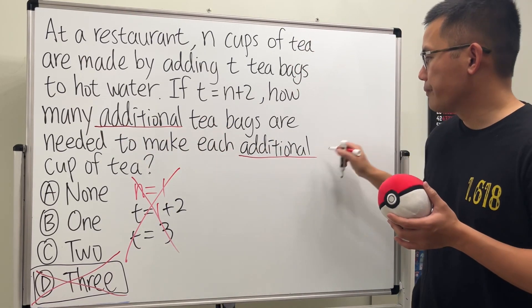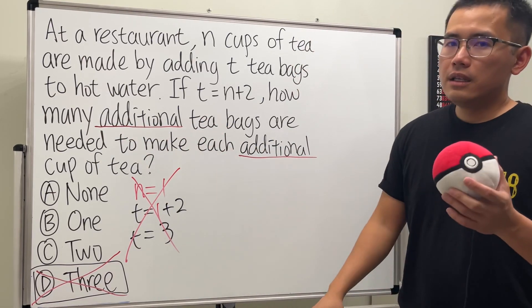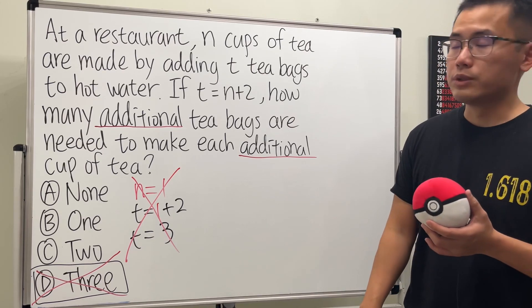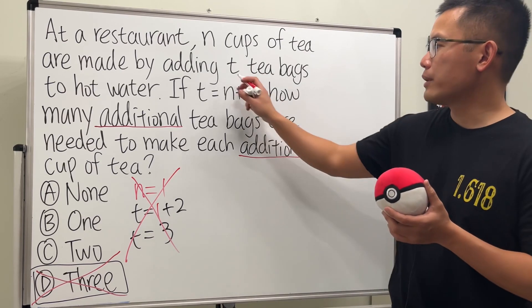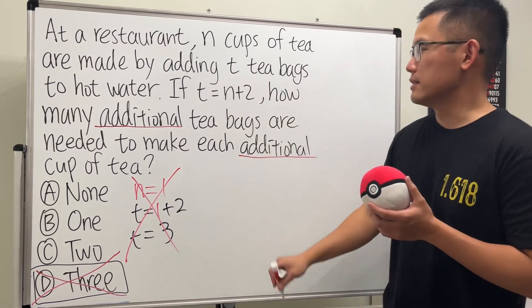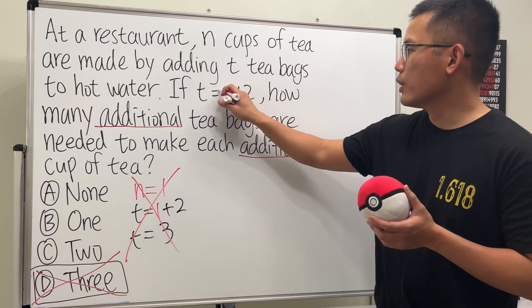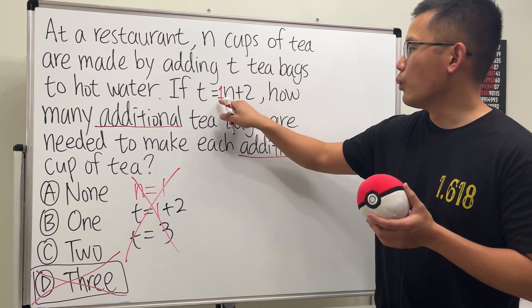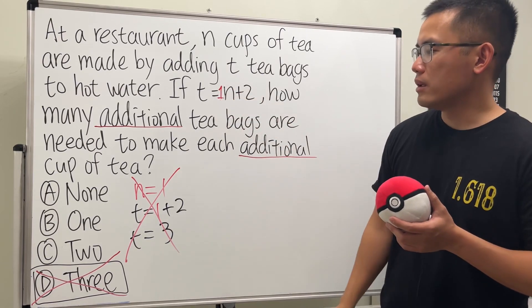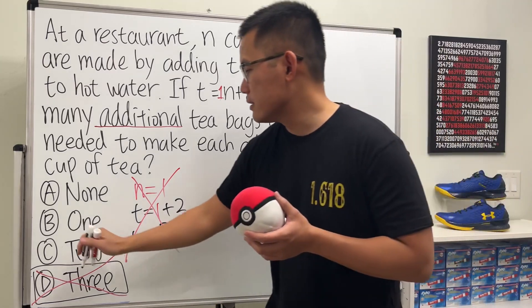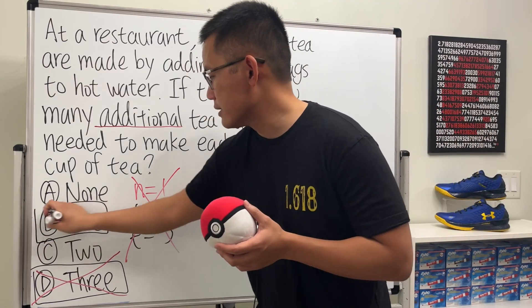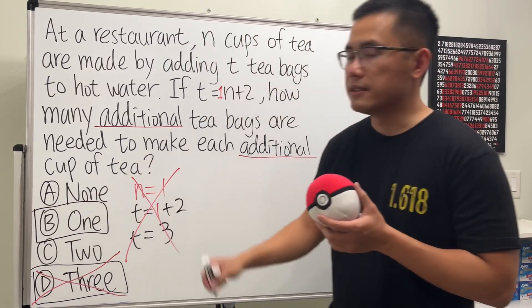If you want to do this the quick way, go back to this equation and look at the slope of the line, which is 1n. So we have the 1 right here, and in fact the answer is 1. This right here is actually the answer.